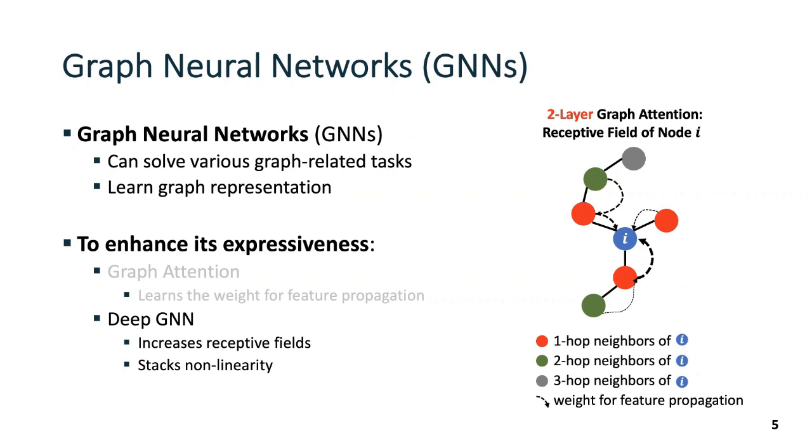Another technique is to build a deep GNN. Deep GNN increases the receptive field and stacks nonlinearity. In the figure, we see that a two-layered graph attention makes node i receive features from its two-hop neighbors.